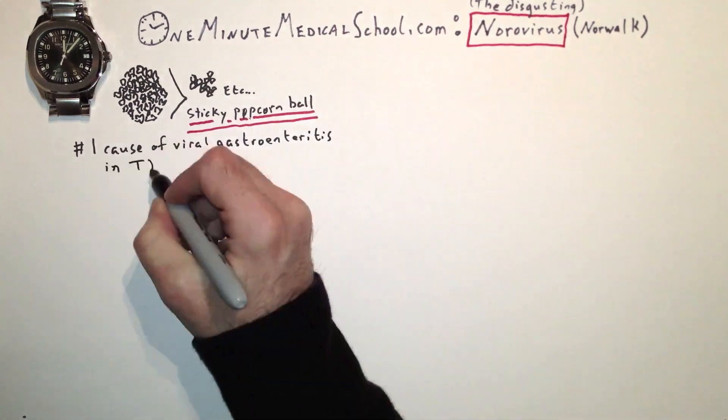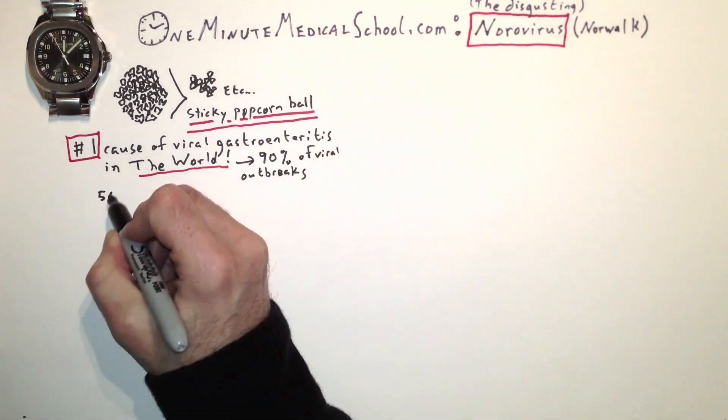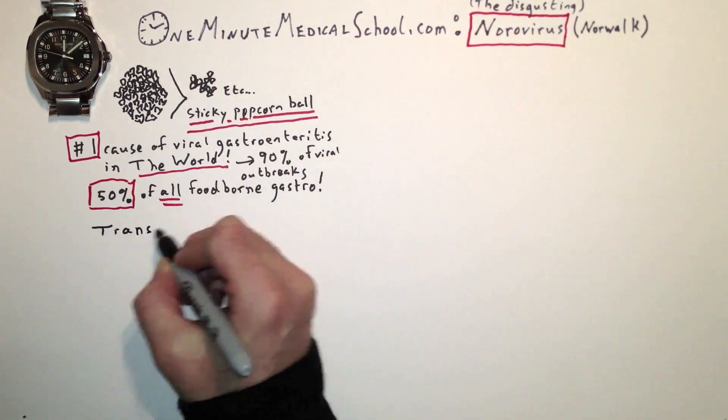They are the number one cause of viral gastroenteritis in the world, responsible for half of all foodborne gastro outbreaks.